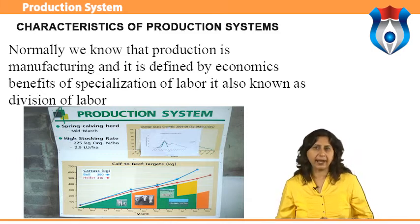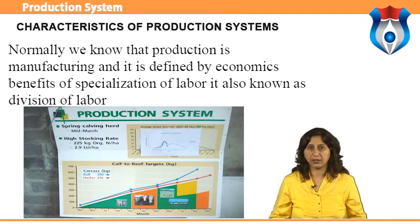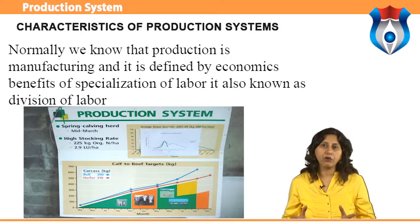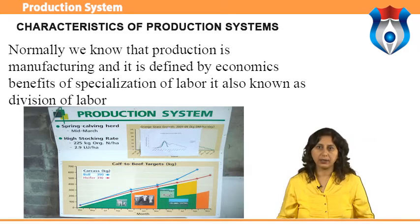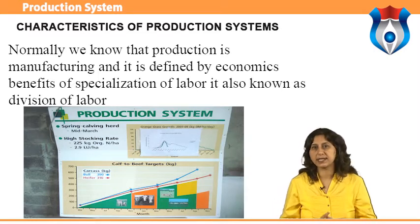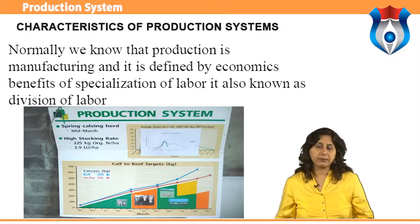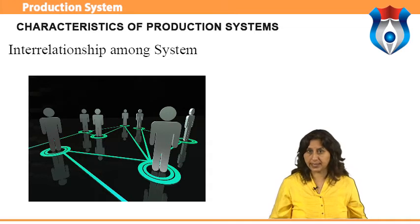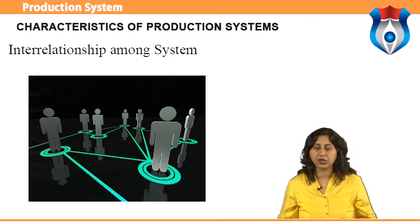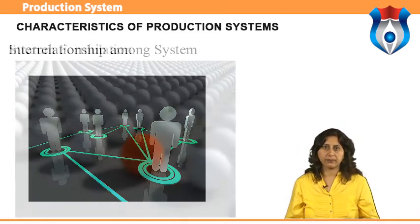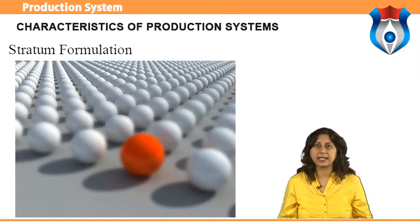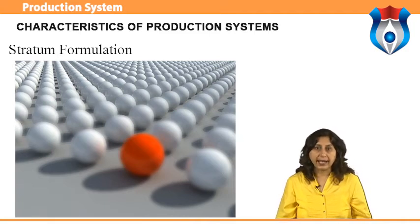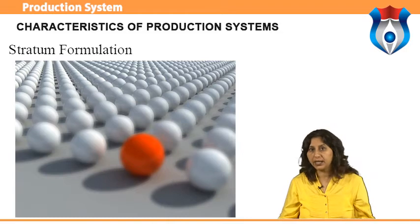A production system holds some key characteristics. System discrimination: a production system involves inputs and outputs and is connected with technology; all phases related to manufacturing are part of the production system environment, and this is called system discrimination. Interrelationship among systems: production is a process with closely related steps, familiar as an interrelationship. Stratum formulation: a production system normally consists of a hierarchy of the organization related to its size and function.